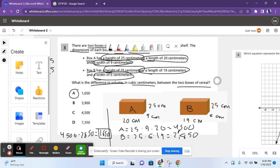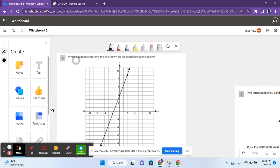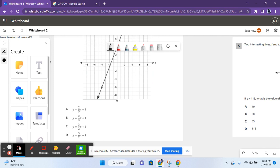Let's move on to the next problem. For question 4, it says which equation represents the line shown on the coordinate plane below. So we have a bunch of equations in the answer choices, and they're all in a form called slope-intercept form, where it is Y equals MX plus B. M is the slope, and B is the Y-intercept.